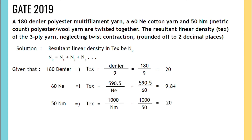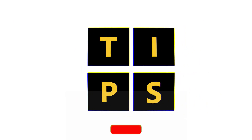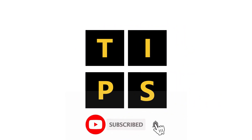So the resultant count is the sum of individual yarn counts: 20 + 9.84 + 20 = 49.84 Tex. For any queries, contact us with the link given in the description box.